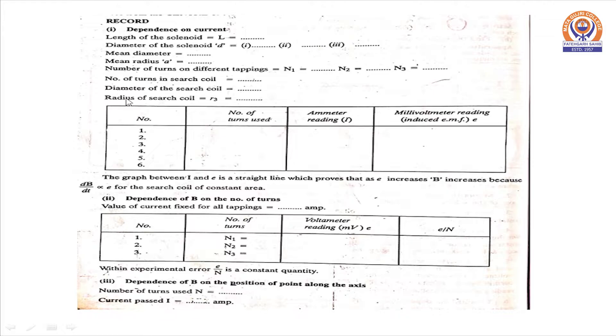Observations recorded will be filled up in this table. The length of the solenoid L, diameter of the solenoid using vernier caliper at 3 points and its mean is taken. The number of turns at different tappings n1, n2, n3 will be written here.